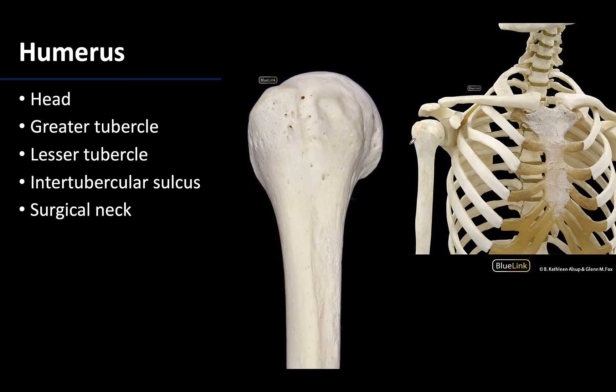Moving to the proximal humerus: here is the head of the humerus, which is the ball of the shoulder ball-and-socket joint. Now you can really see the fit between those two structures.